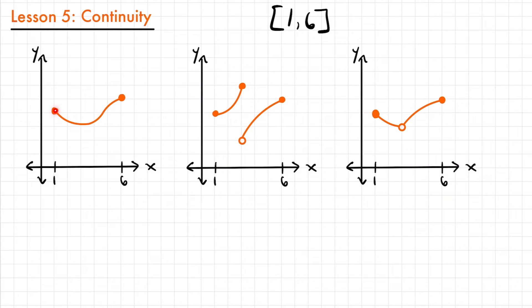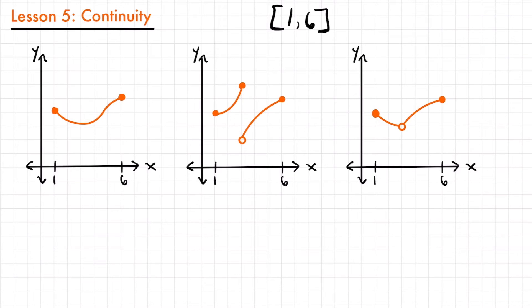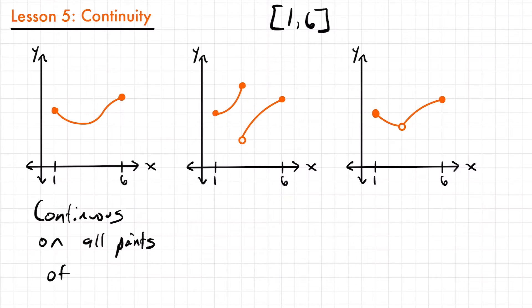Let's look at our first graph and discuss its continuity. If I start at x equals one and follow the graph all the way over to x equals six, I notice there's no breaks, no jumps, no holes, or any interruptions of any kind. It is perfectly continuous all the way from x equals one to x equals six. So the graph is continuous on all points of the interval from one to six.